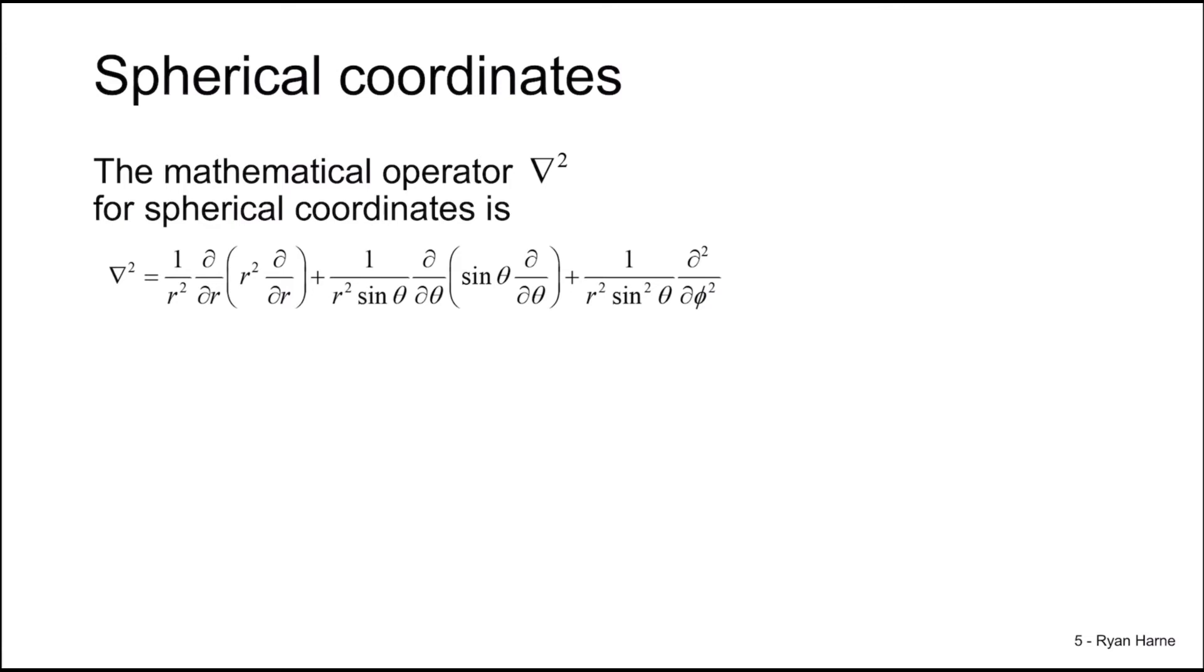Before we answer that, let's look at spherical coordinates. Because the mathematical operator nabla squared, or the Laplacian, has a very complicated organization for spherical coordinates. So just remembering the notation between Cartesian coordinates x, y, and z, and a point here in spherical space, we have the following coordinates: the radius r, which is the radial distance from the Cartesian origin to the point, say p.